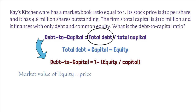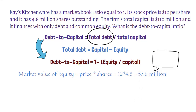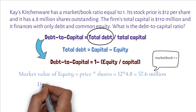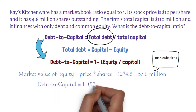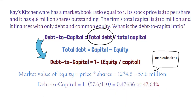Now, calculate the market value of equity as stock price times shares outstanding, which is $57.6 million. Since the market to book ratio equals 1, the company's book value of equity is also $57.6 million. After plugging the numbers into the equation, the debt to capital ratio comes out as 47.64%.